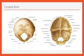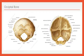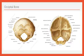Now what is foramen magnum? Foramen magnum is divided by a ligament called the alar ligament. This ligament divides the foramen magnum into two parts: the anterior compartment and the posterior compartment. The anterior compartment is directed upwards and the posterior compartment is directed downwards. Structures passing through the anterior compartment are the membrana tectoria and apical ligament of dens. Structures passing through the posterior compartment are the lower part of the medulla oblongata and spinal cord with meninges.